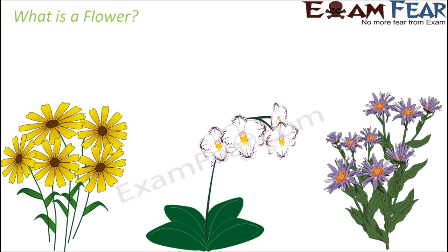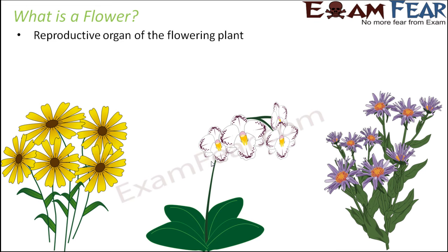So what is a flower? You would have seen a lot of flowers — different shapes, different colors, different fragrance — but how can you define a flower? It is the reproductive organ of the flowering plant. Plants are able to reproduce because of flowers. Like every organism needs to reproduce — human beings give birth to their young ones to retain their species — if reproduction doesn't happen, the entire species will get lost. So if plants do not reproduce, one day we will have no plants on this earth. For sexual reproduction to take place, there has to be a reproductive organ, and that reproductive organ in a plant is the flower.